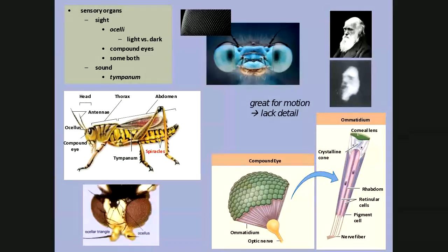There's a picture online of Charles Darwin as he would look through compound eyes — not great for detail, but very good for sensing motion.